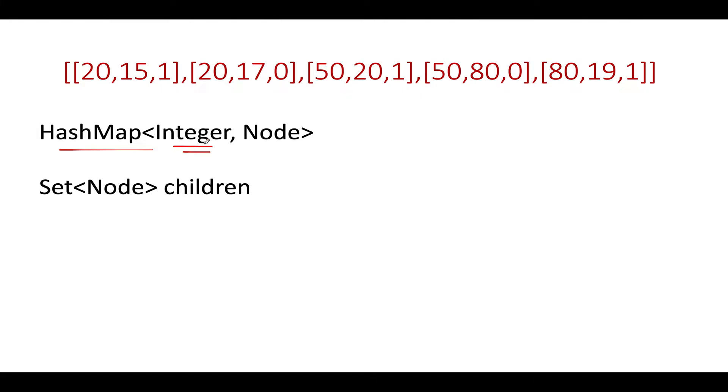Here I've created the hash map. The integer would be the value and corresponding to a particular value we'll store that node's entry. Along with this we will keep track of what all child nodes have been created so far in the past. This will help us identify the root of the binary tree.